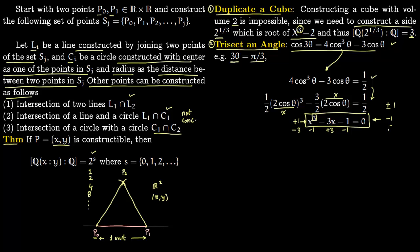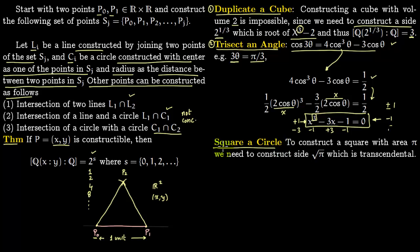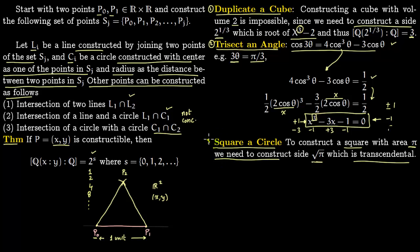The third ancient problem is squaring a circle: can you construct a square with area π? To construct such a square you first have to construct a side of length √π. But √π is transcendental, and transcendental numbers have infinite degree over Q, whereas constructible extensions only have finite degrees 1, 2, 4, 8, and so on. So it is not possible to square a circle.